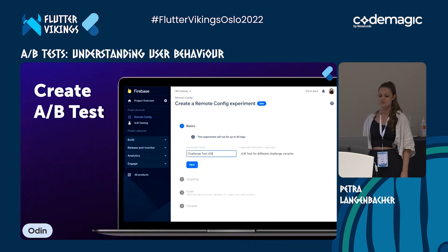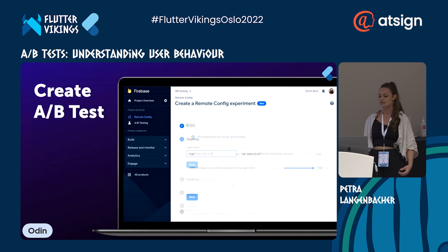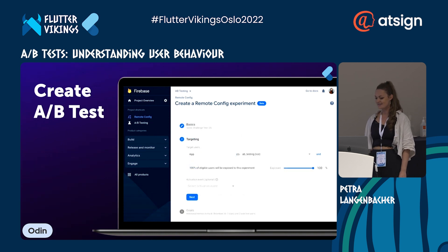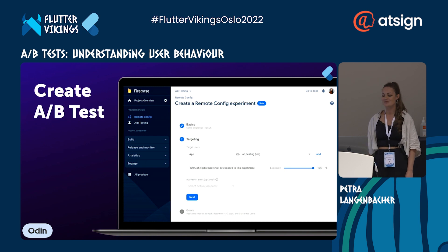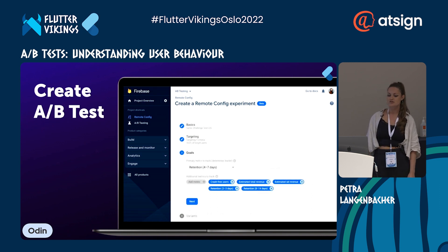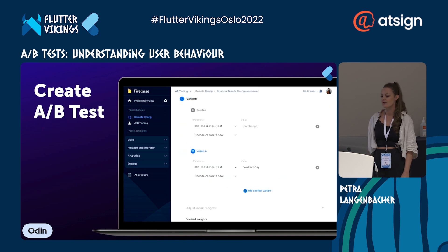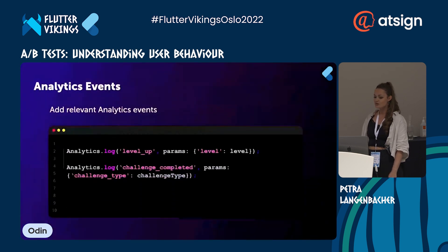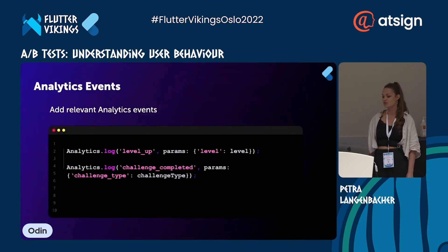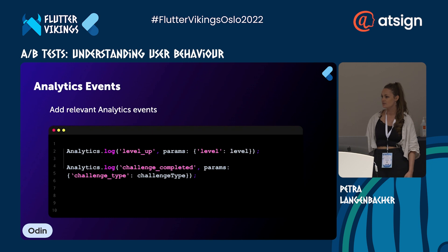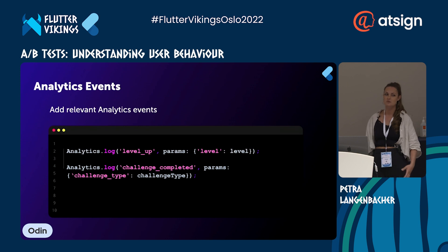In the console you can also create the A/B tests. You add a name and description, target users, and an optional activation event — meaning the test is only applied to users after that event. Then you add metrics that determine the better version: there are predefined metrics like crash-free users, revenue, or retention, but you can also add your own. Finally, you configure the variants and their weighting. To evaluate which variant performed better, you may also want to add your own analytics events — for example, an event when a user completes a level or challenge, so you can see which group played more.